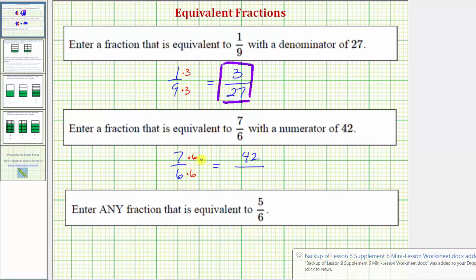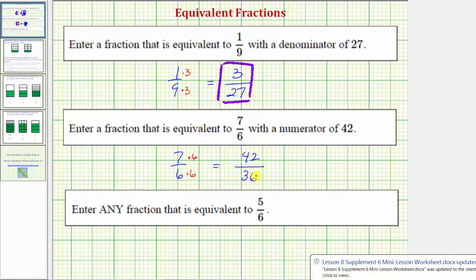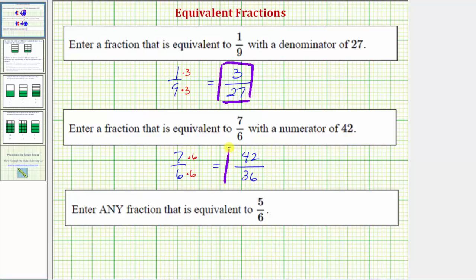So again, 7 times 6 equals 42, and for the denominator, 6 times 6 equals 36. So the fraction that is equivalent to 7/6 with a numerator of 42 is 42/36.